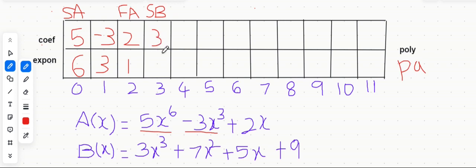You have 3x^3, so 3 and 3 here. The second term is 7x^2, so 7 and 2. Next one is 5x, with coefficient 5 and exponent 1.